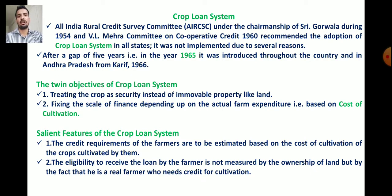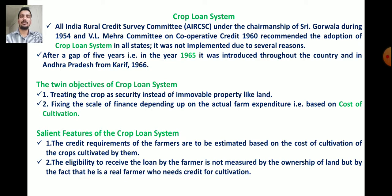The twin objectives of the crop loan system are: First, treating the crop as a security instead of immovable property like land. In crop loan system, the crop itself is treated as security. Second, fixing the scale of finance depending upon actual farm expenditure, that is based on cost of cultivation or cost of production.